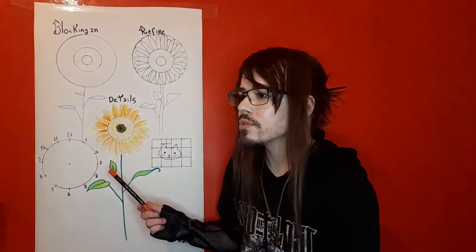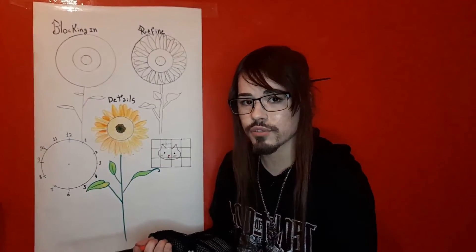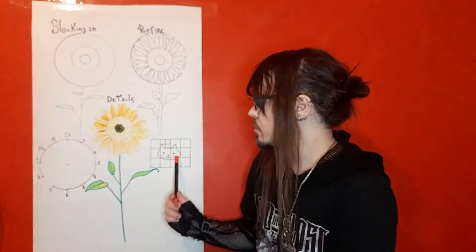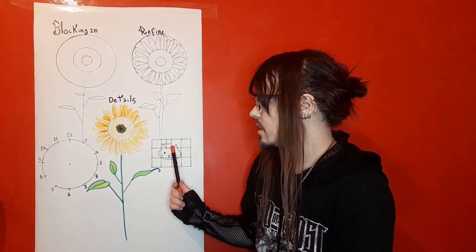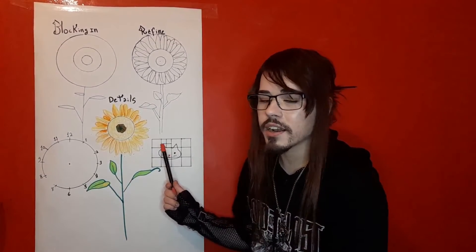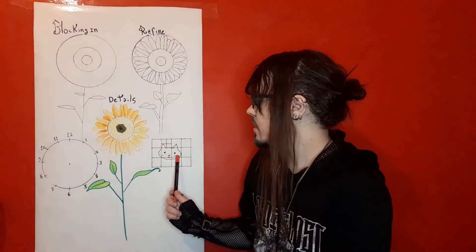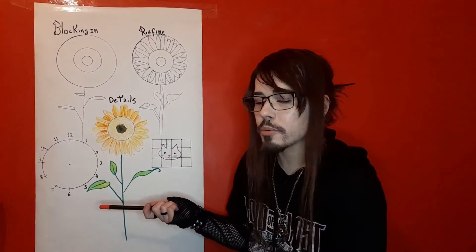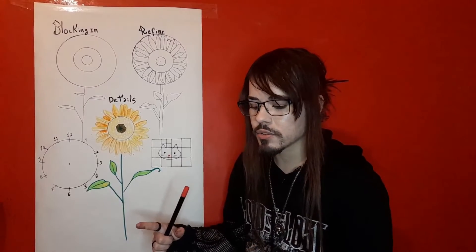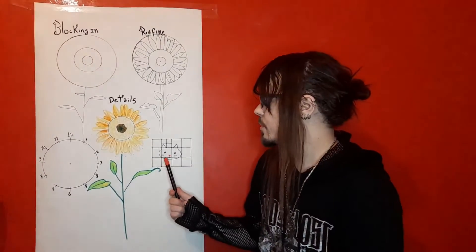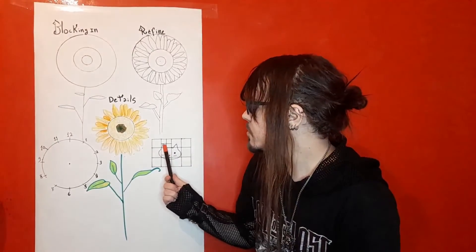When you're confused if your image is correct after you actually have drawn it already, you can use the grid method. So you have your reference, and you put a grid on top of it. You can make it, or you can put it in an app. And you draw the grid, or you imagine it, depending on how you prefer, on your actual paper that you'll be drawing.